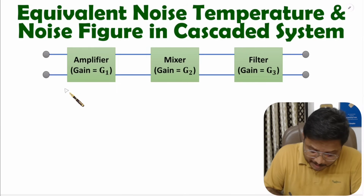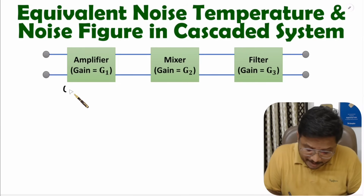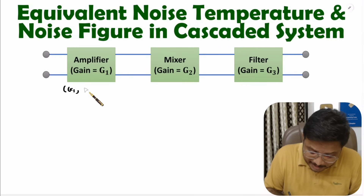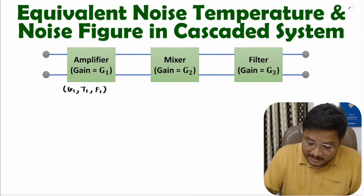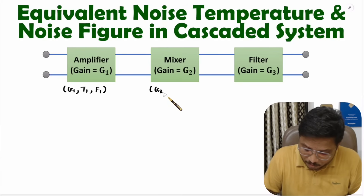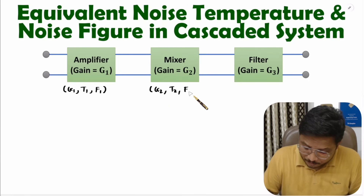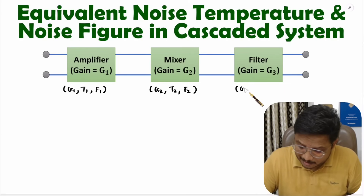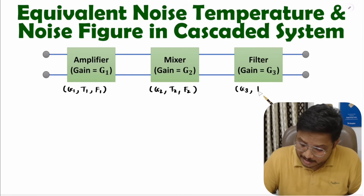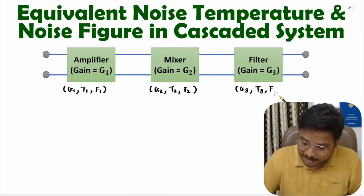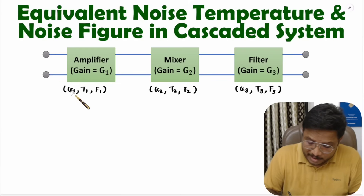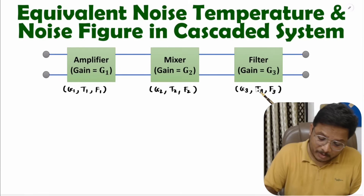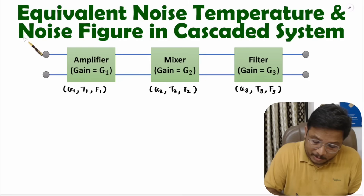Let us consider the first block having gain G1, noise temperature T1, and noise figure F1. The second block has gain G2, noise temperature T2, and noise figure F2. And the third block has gain G3, noise temperature T3, and noise figure F3. Based on this data, I will explain the calculation of equivalent noise temperature and equivalent noise figure.